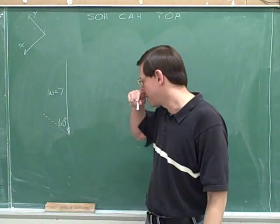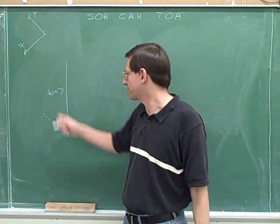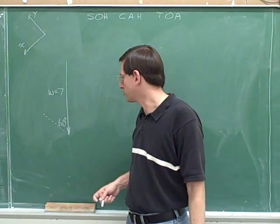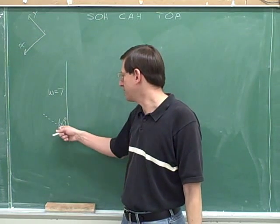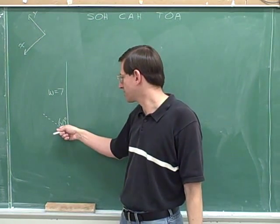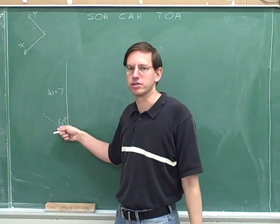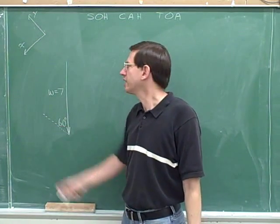Let's try another problem. Here's our overall vector, w equals 7, and we've indicated a 60 degree angle down here.